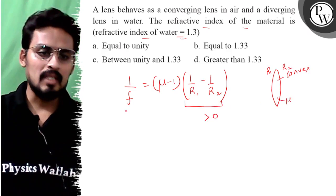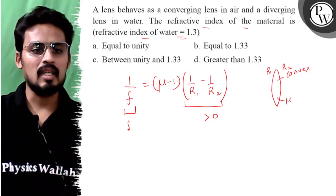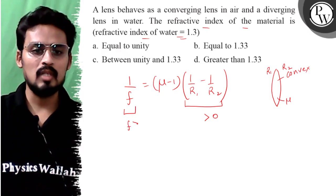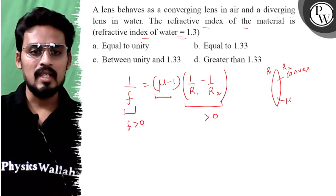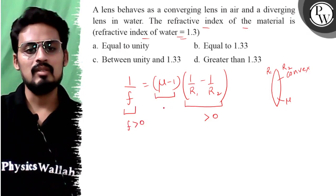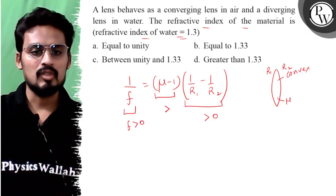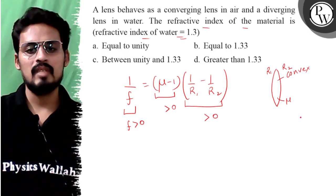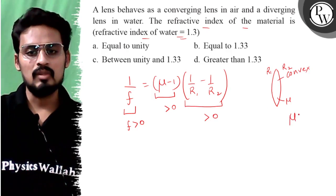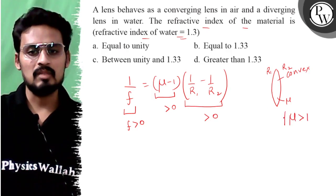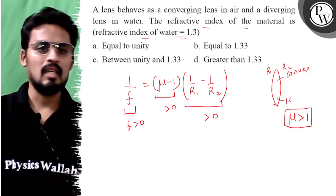Now I know that in the air case, the question says converging, meaning focal length f is positive. So this value should also be positive, which means μ must be greater than 1. This is understood from the air case.